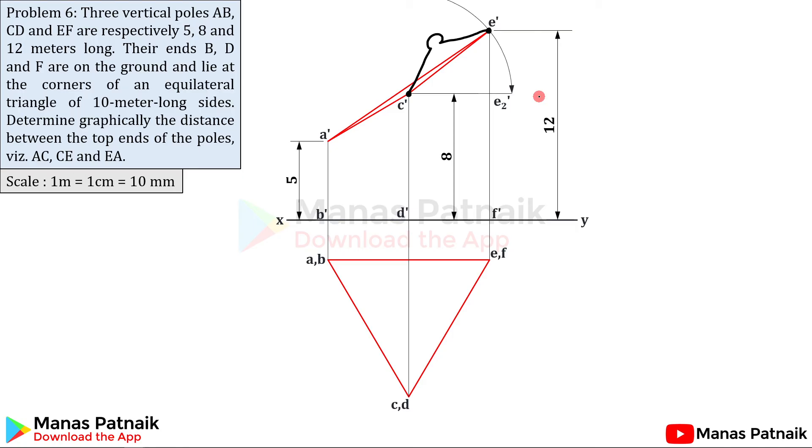So what about CE? Take a look. Keep one leg of your compass at c', other leg at e', rotate until it becomes absolutely parallel to this XY. So this is c'e2': C old, e' E old, e2' E2 new.